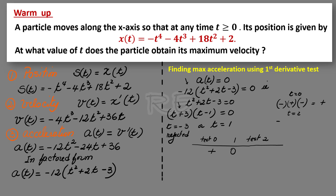To the right of 1, we test t equal to 2. Negative 12 will always be negative. t plus 3 equals 5, positive. t minus 1 equals 1, positive. So the function will be negative. We go from positive to 0 to negative, so t equal to 1 is a maximum.